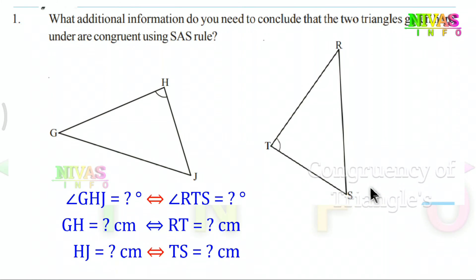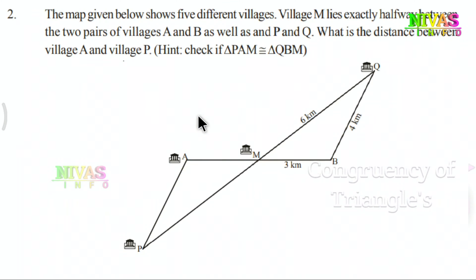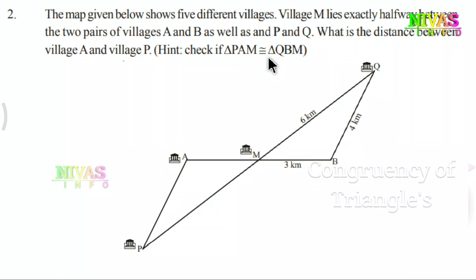The map shows five different villages. Village M lies exactly halfway between the two pairs of villages A and B, as well as P and Q. What is the distance between village A and village P? Hint: check if triangle PAM is congruent to triangle QBM. Here we have five villages.